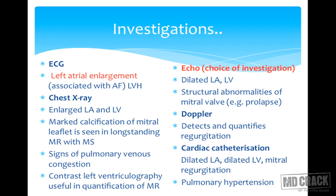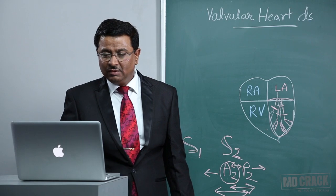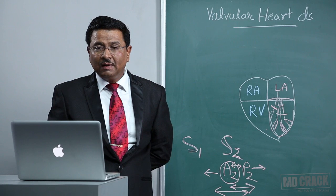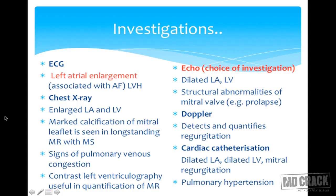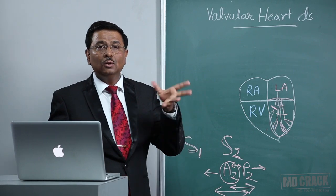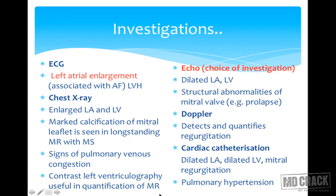Investigations: ECG will show left atrial enlargement due to volume overload, and possibly left ventricular hypertrophy. Chest X-ray shows enlarged left atrium and left ventricle; marked calcification of the mitral leaflet is seen in long-standing MR with MS. Signs of pulmonary venous congestion will also be present. Contrast left ventriculography is useful for quantification of MR — the amount of contrast flowing back from the left ventricle into the left atrium indicates the degree of regurgitation. Echocardiography is the choice of investigation, showing dilated left atrium and left ventricle.